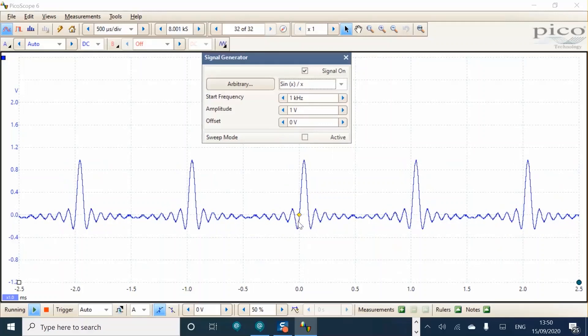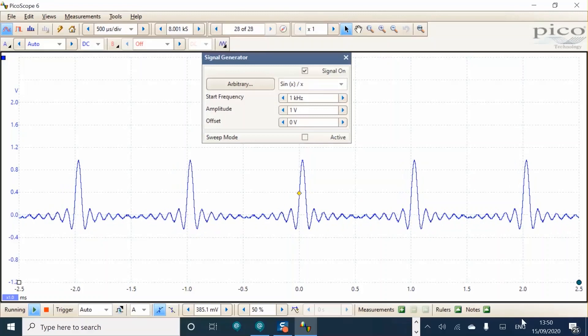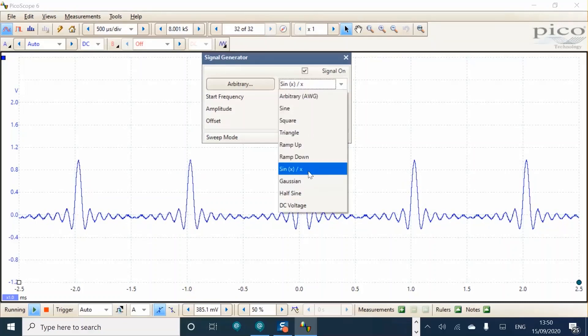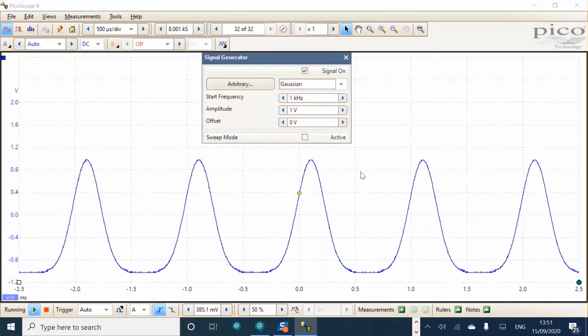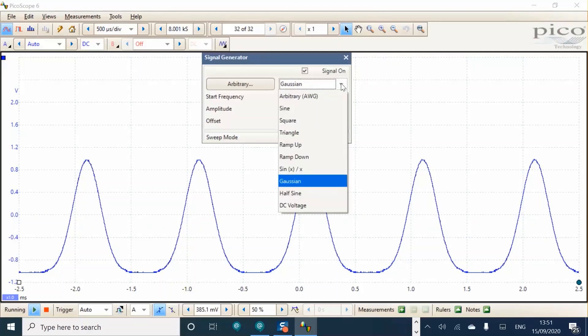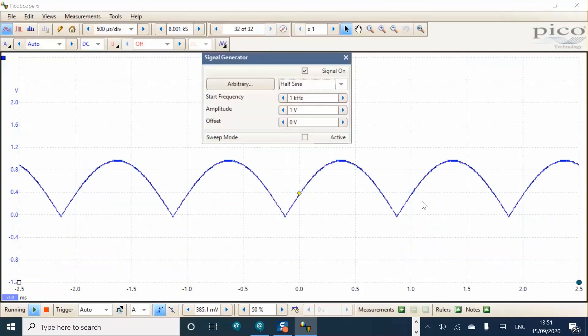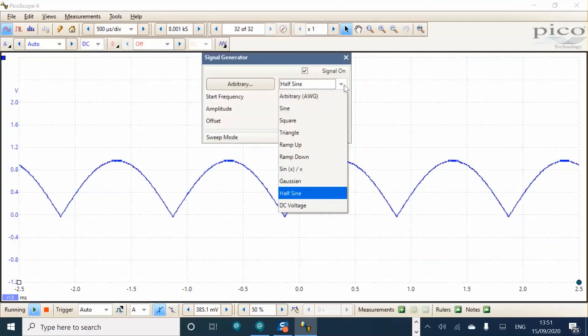Here you'll see that the trigger point is not isolating the signal effectively. So all we need to do here is just move the trigger point up and then it always catches that main leading edge. There's also Gaussian, half sine and DC voltage.